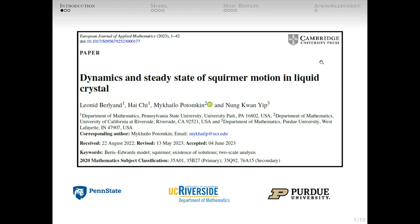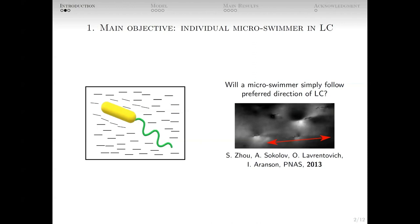The paper focuses on theoretical study of the model of microorganisms swimming in a liquid crystalline environment. Examples of microswimmers are bacteria. The liquid crystal typically possesses a preferred direction, so elongated microorganisms tend to align with the preferred direction, like in this experimental image from the paper of 2013 by Zhou and collaborators.